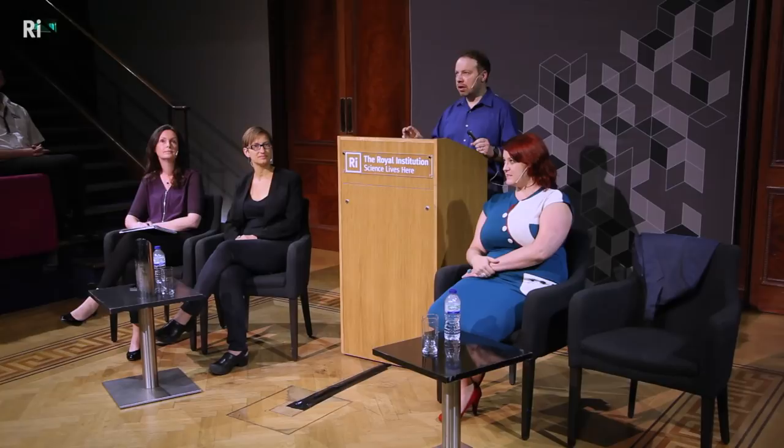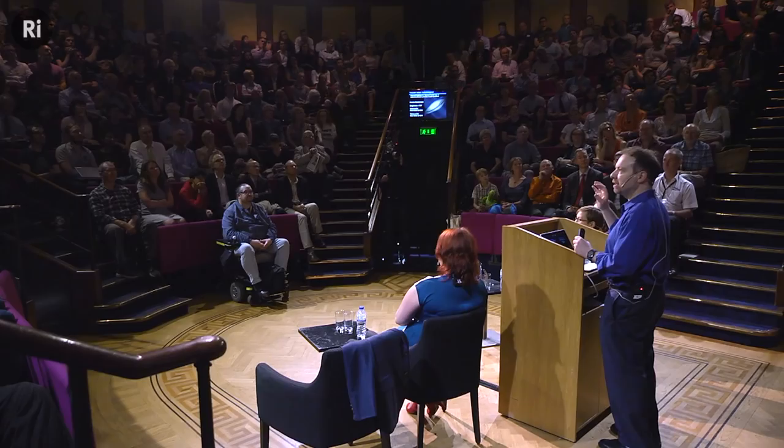The inverse square law makes this very quantitative: if a supernova is twice as far away, it'll be four times as faint; if it's three times as far away, it is nine times as faint. So we go and look with our telescopes for these exploding stars in nearby and distant galaxies and gauge their distances from the brightness of their light.